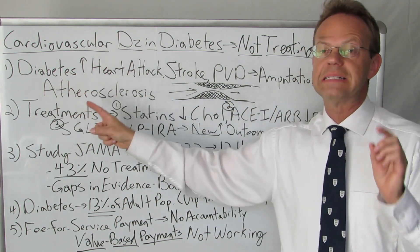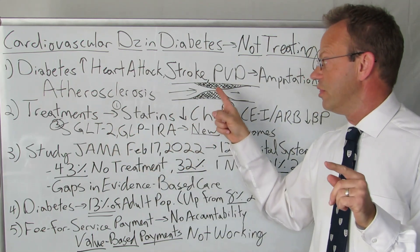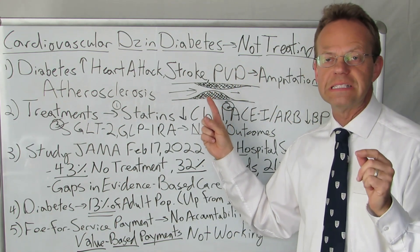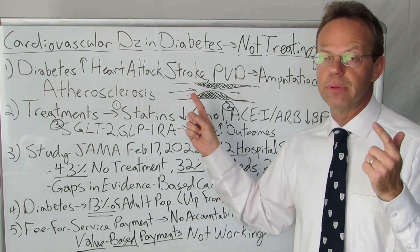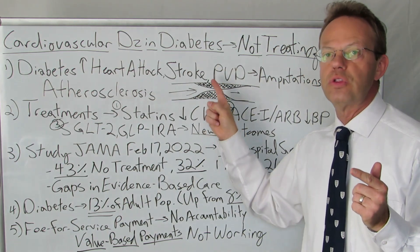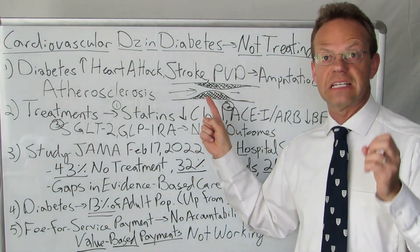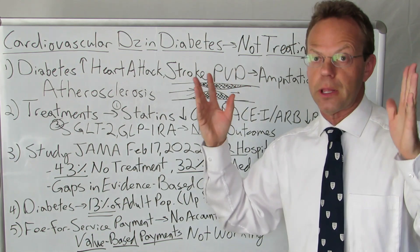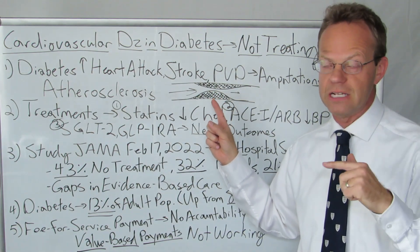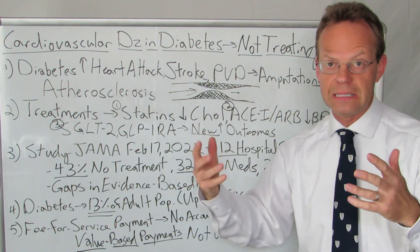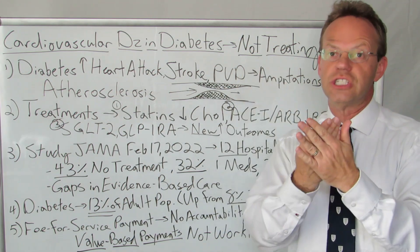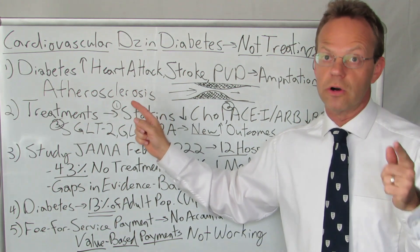Diabetes makes atherosclerosis worse because it makes these plaques — these groupings of cholesterol that narrow the arteries — extra sticky. High blood pressure is also bad because it causes damage to the plaques themselves and makes them more likely to rupture. These plaques can rupture and they explode, and when those plaques explode you're going to get a really big blockage. So hypertension and diabetes synergistically combine to make atherosclerosis a lot worse than in somebody who does not have diabetes.